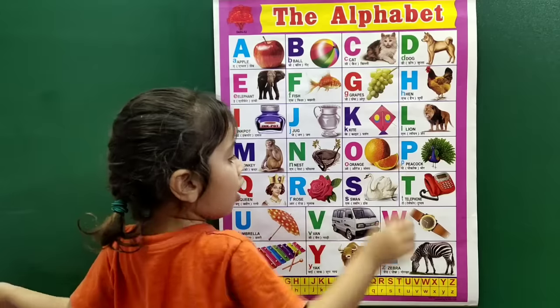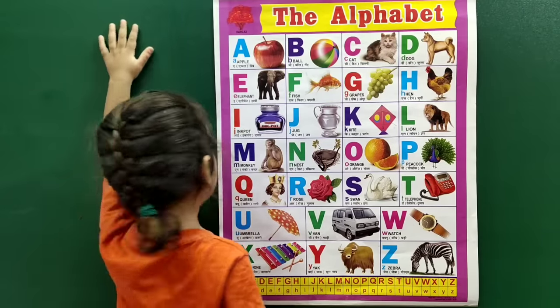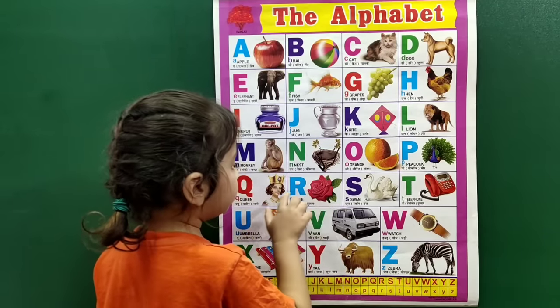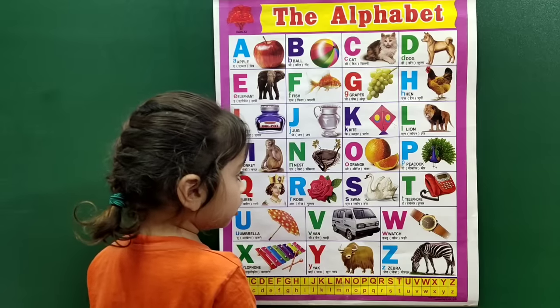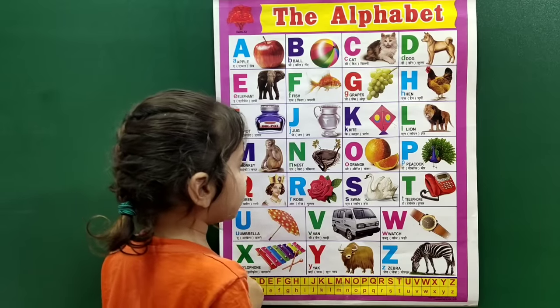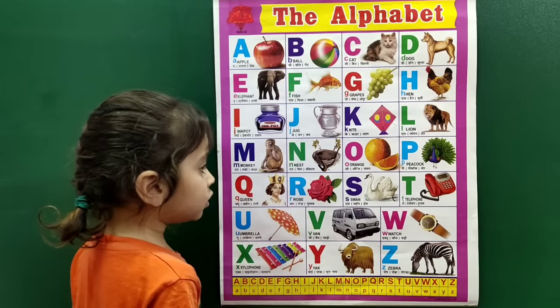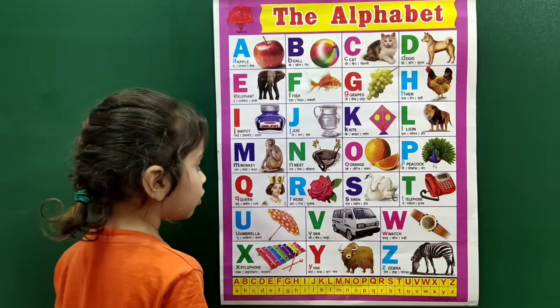O for orange, P for peacock, Q for queen, R for rose.